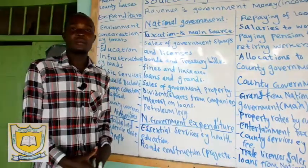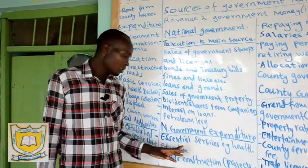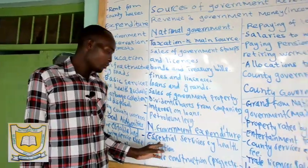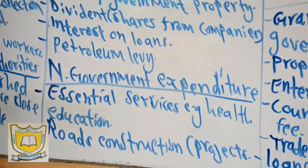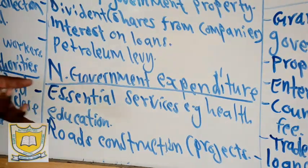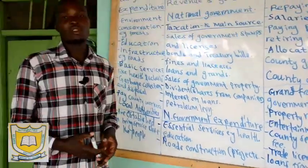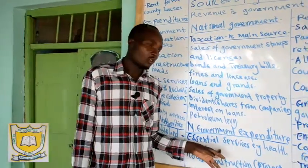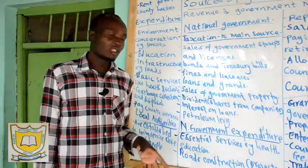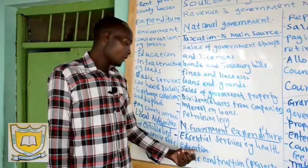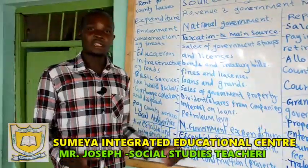Now we want to look at government expenditure — how the government uses this money. Number one: provision of essential services like health and education. The government normally builds hospitals. For example, with COVID-19, equipment is being imported to hospitals to help patients suffering from the virus. The government uses this money to provide health facilities, medicine, equip and employ doctors. For education, they employ teachers, build schools, and provide learning materials to learners.